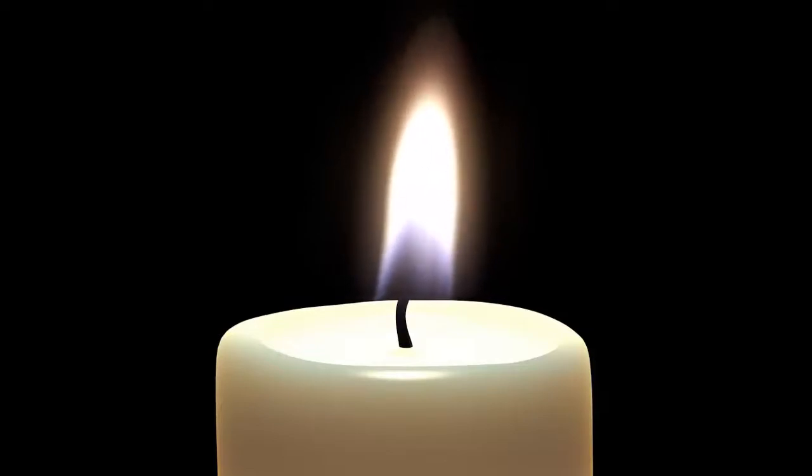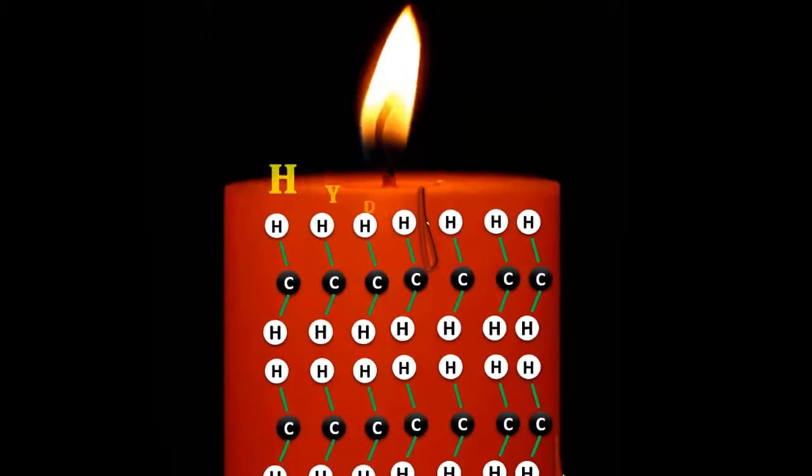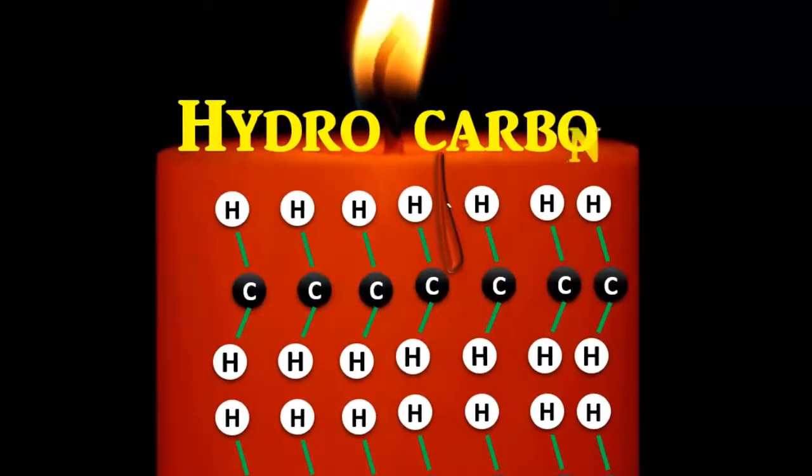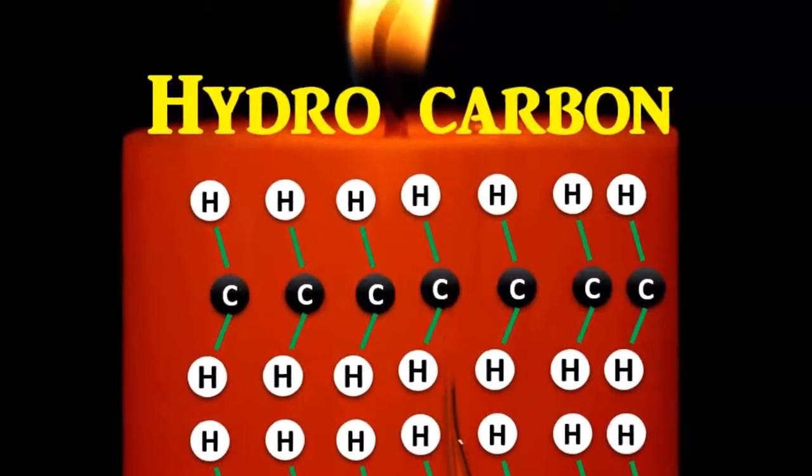The wick works by conveying the fuel to the candle. Paraffin wax is a small chemical factory that converts the hydrocarbons in wax into carbon dioxide and water.